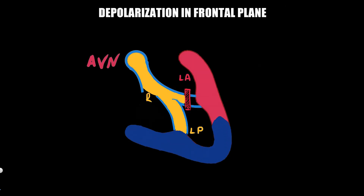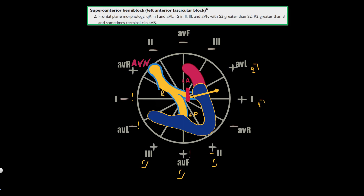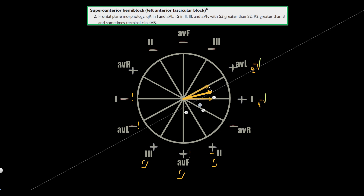In the next stage, depolarization propagates upward and to the left, toward the blocked region. The depolarization vector is oriented leftward and slightly upward. It projects to the positive part of the first standard lead and AVL, producing a positive deflection — R-waves. It also projects to the positive part of the second standard lead, making the R-wave there larger than in the third standard lead. The same vector projects to the negative part of AVF and the third standard lead, producing S-waves.